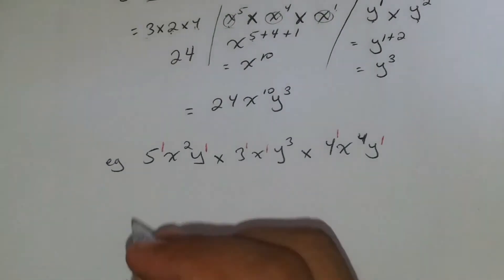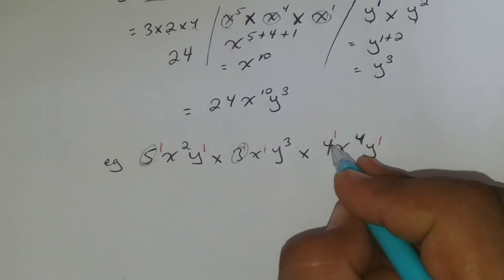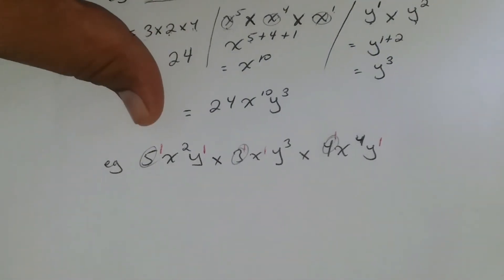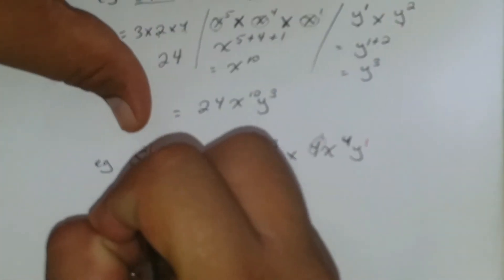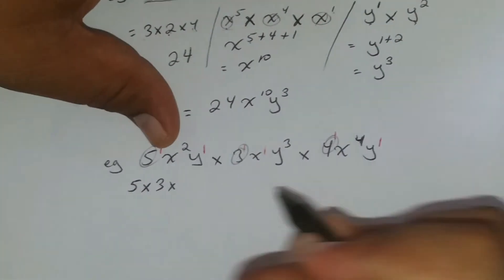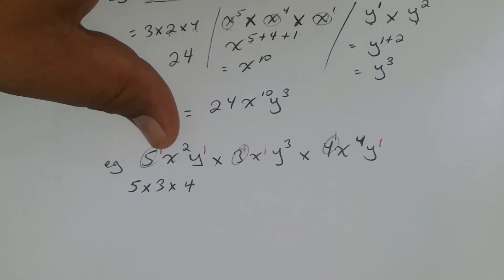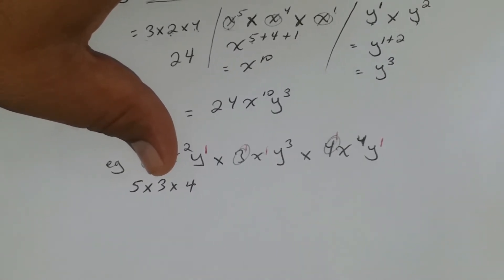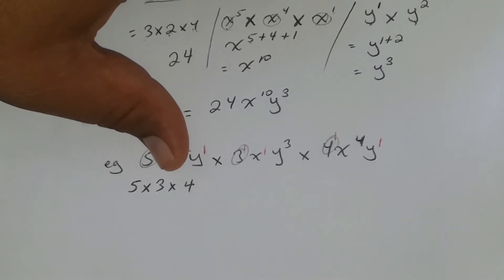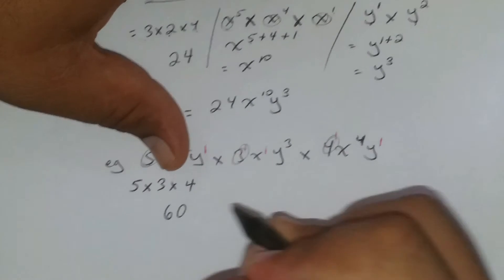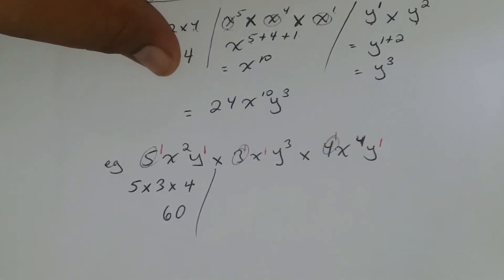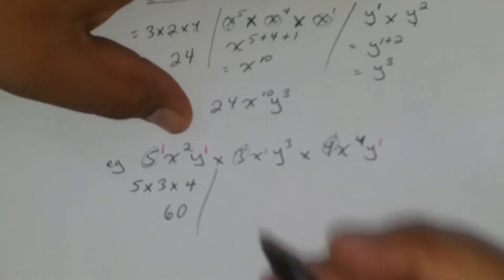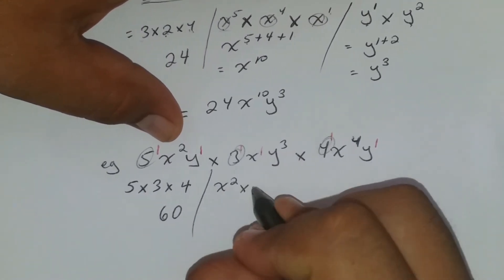For the numbers: 5, 3, and 4 — the bases are not the same, so we cannot apply laws of indices. We just multiply: 5 times 3 is 15, and 15 times 4 is 60. For the x terms: we have x to the second, x to the first, and x to the fourth.